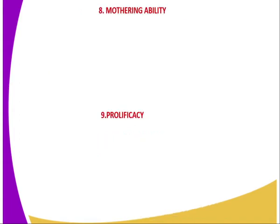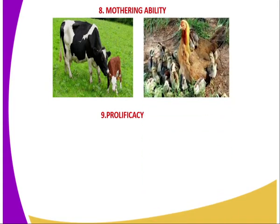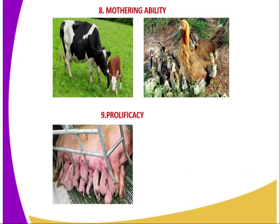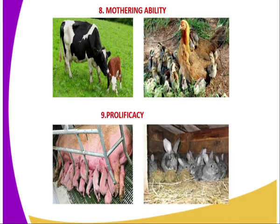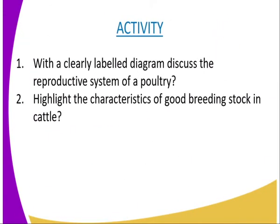Eighth is mothering ability. The animal selected should be able to take good care of its young ones — for example, a hen taking care of chicks, or a cow taking good care of its calf. Ninth is prolificacy, which refers to the ability to produce as many offspring as possible per birth. For example, select pigs that give birth to many piglets, or rabbits that are highly prolific.